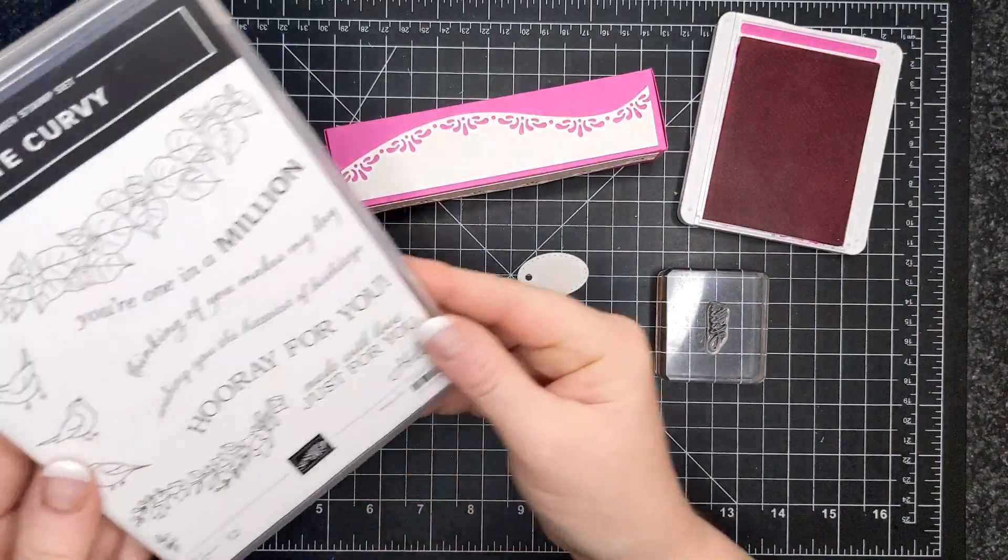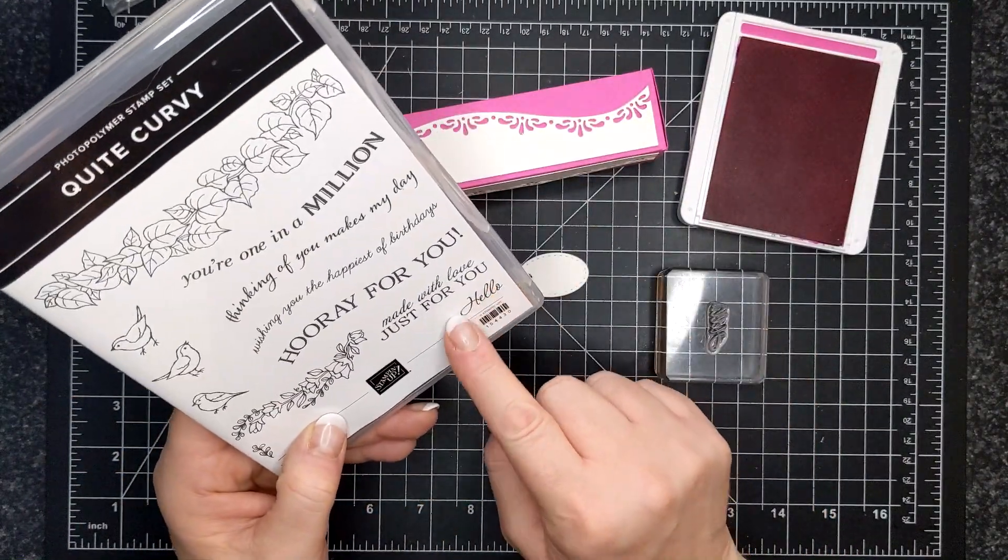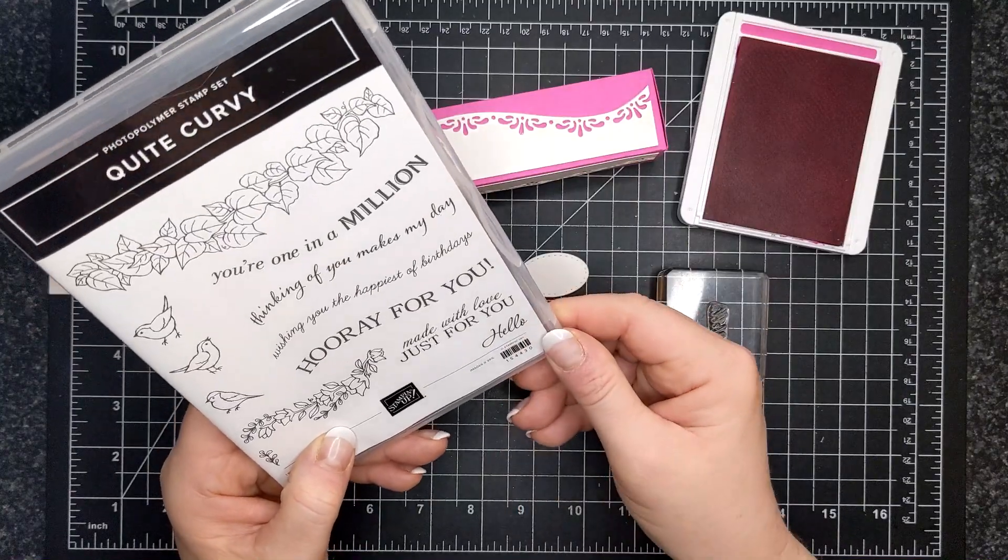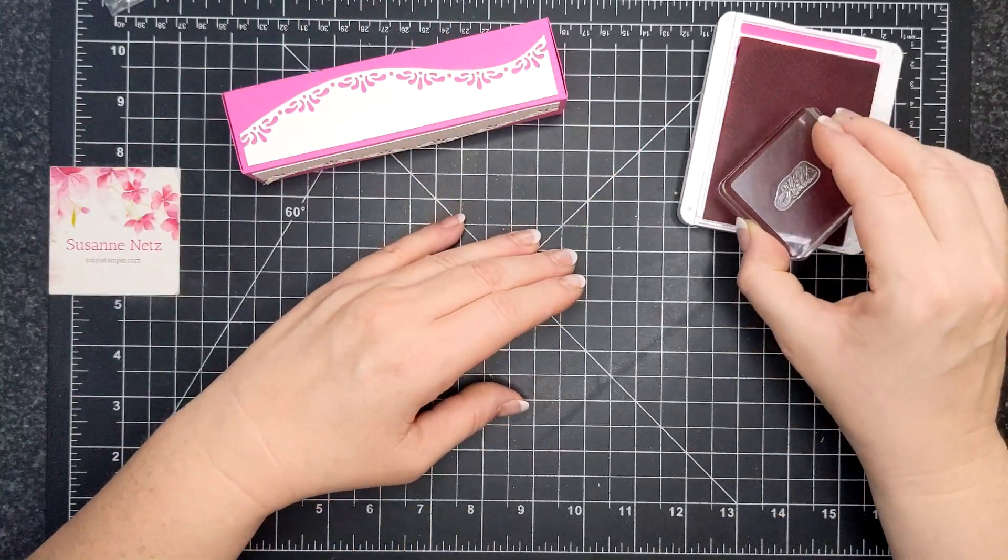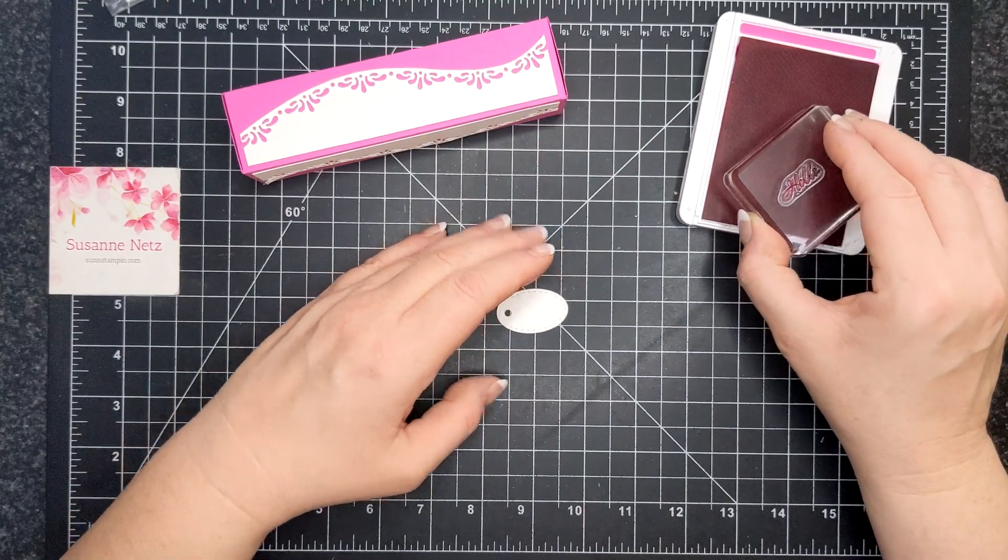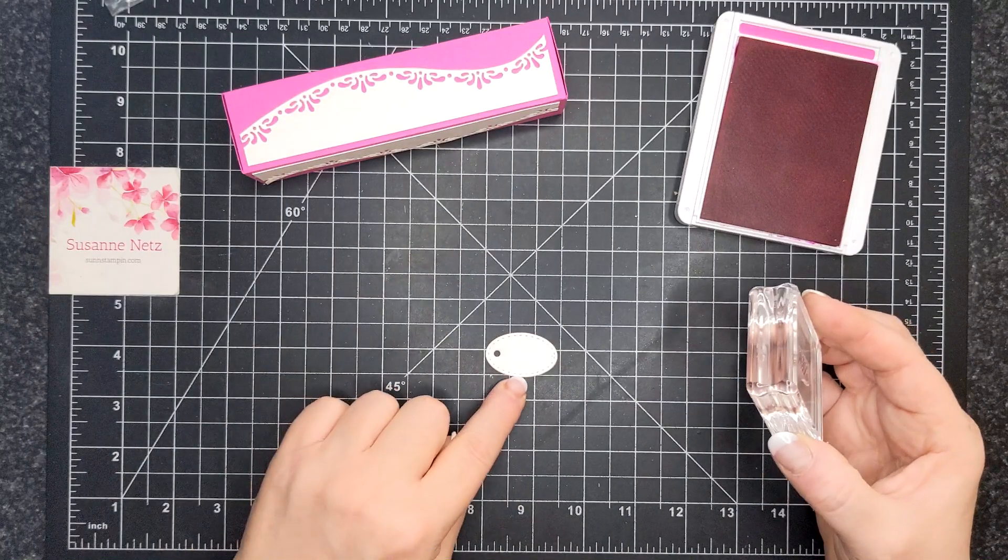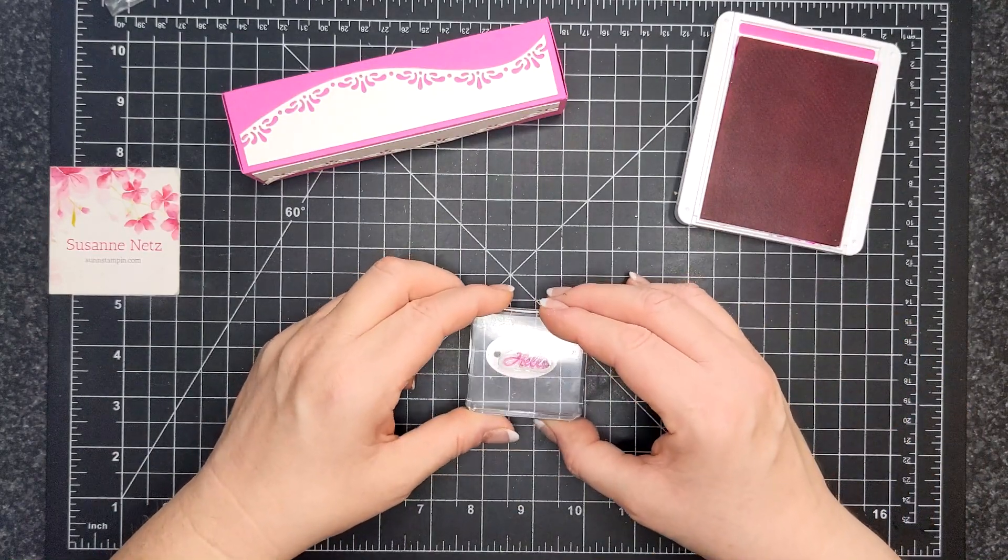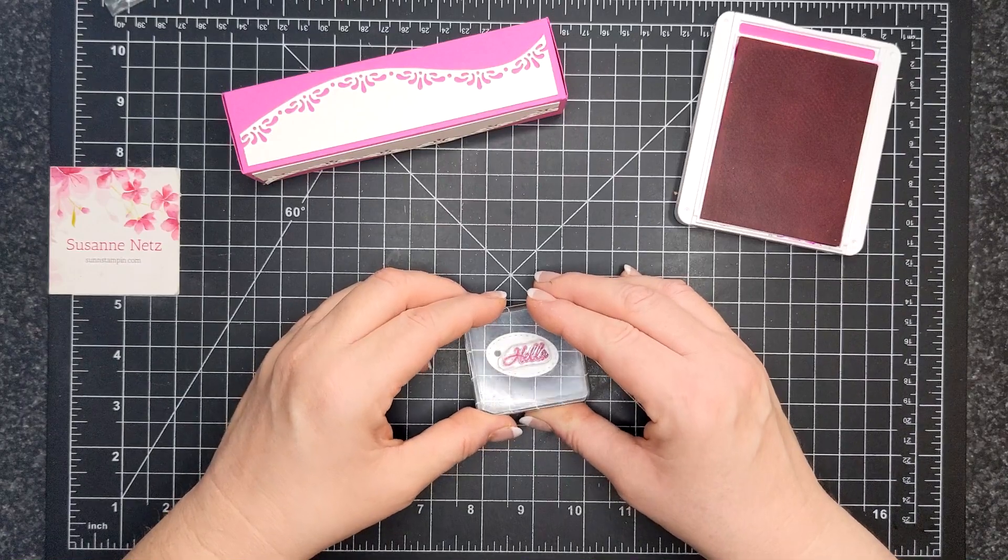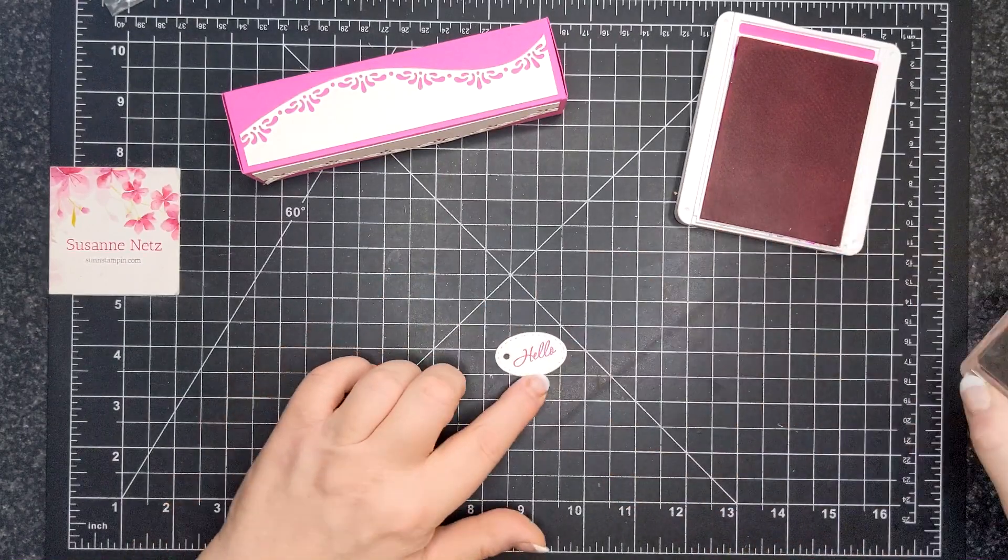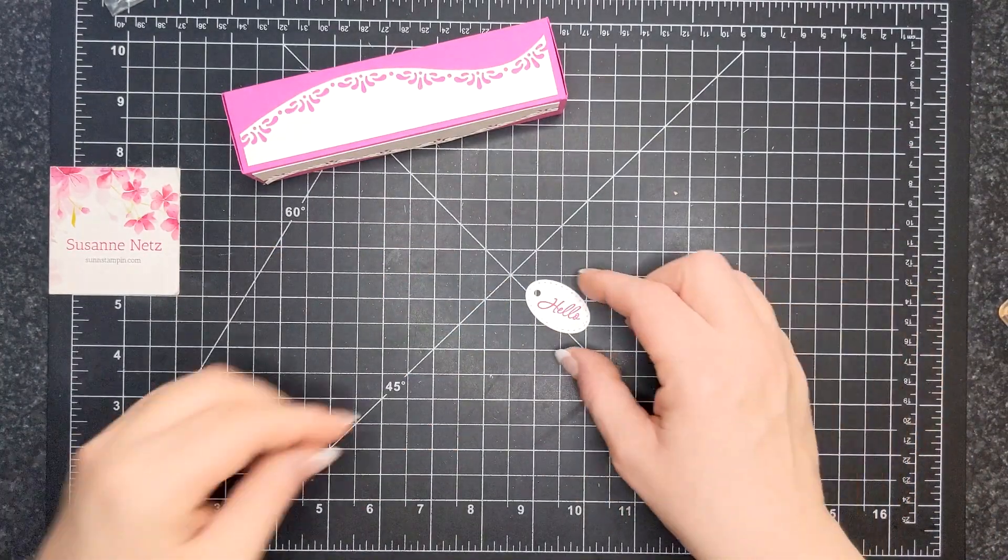So, this is what the stamp set looks like. I'm just going to use this hello sentiment. I had this in my box of die cuts.